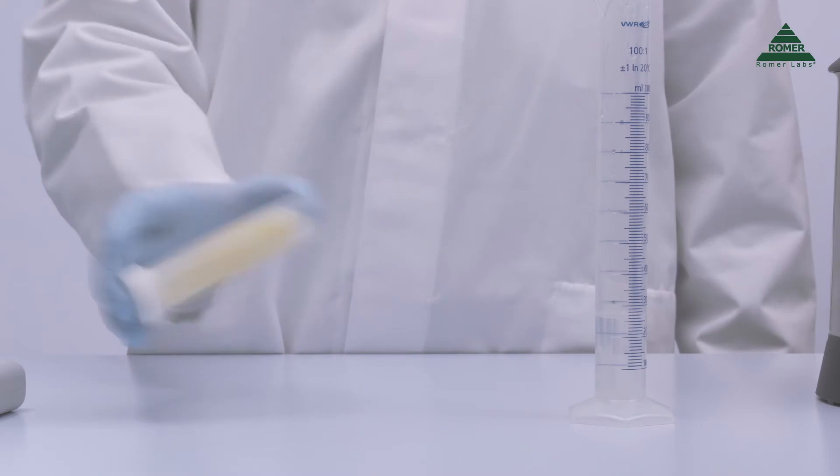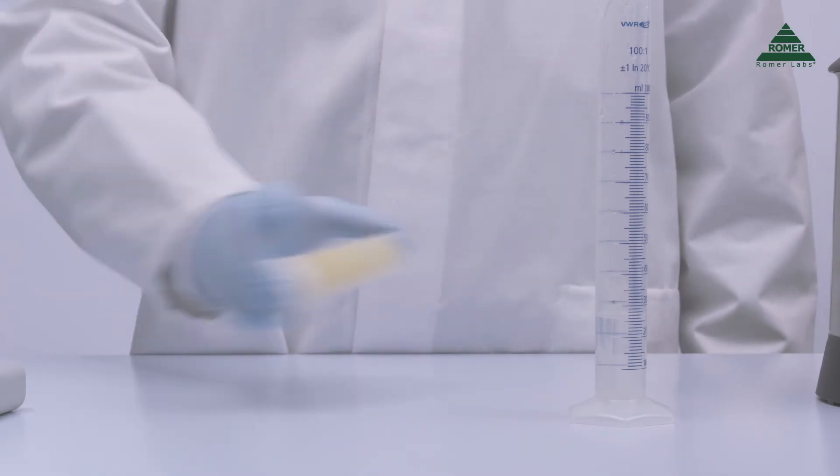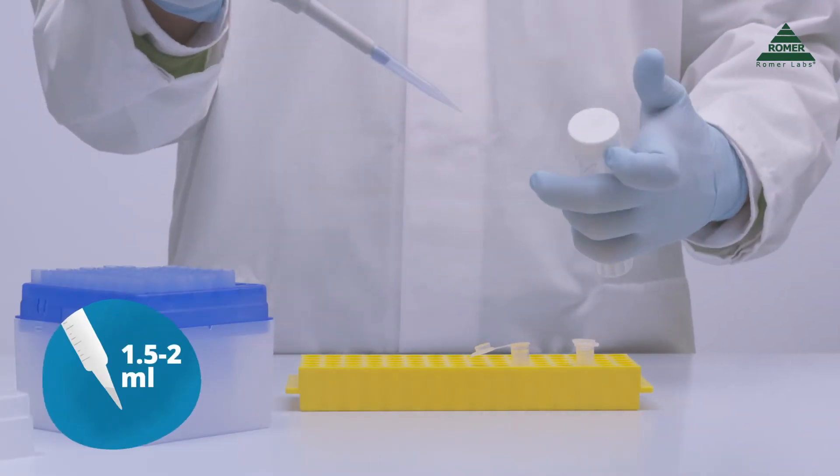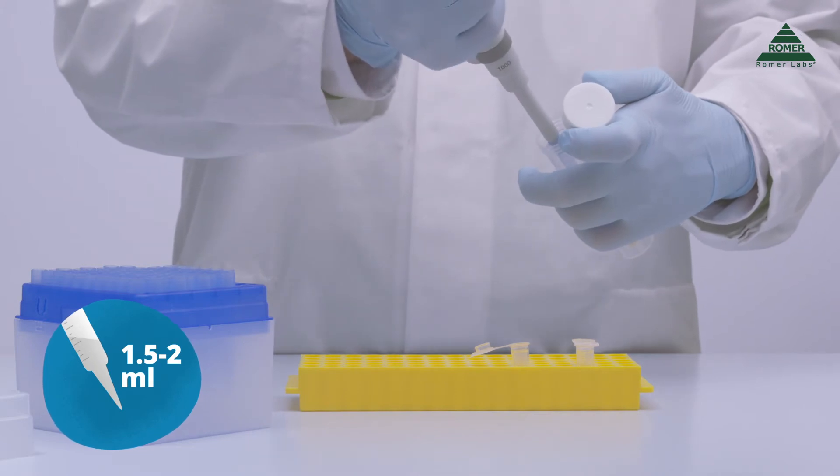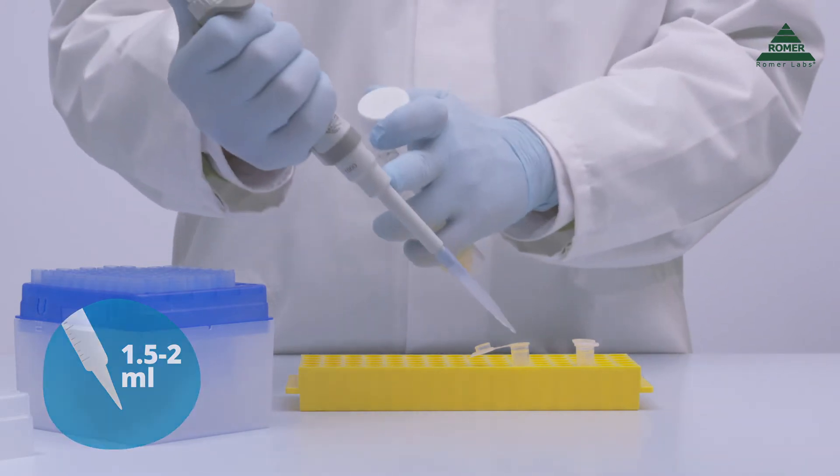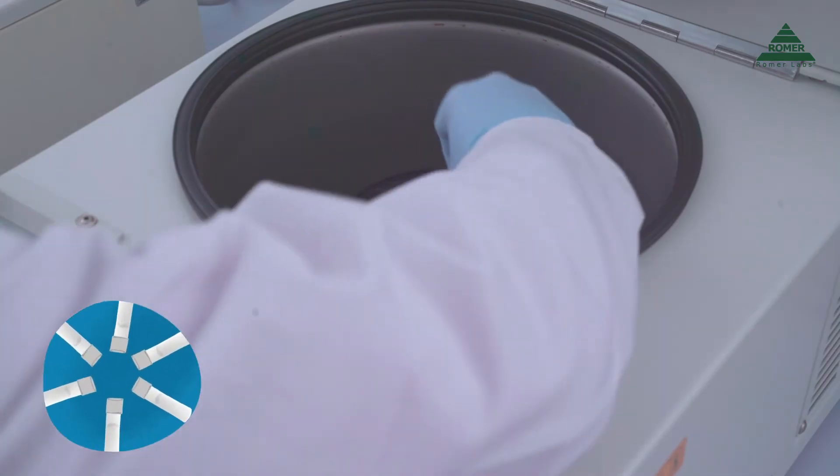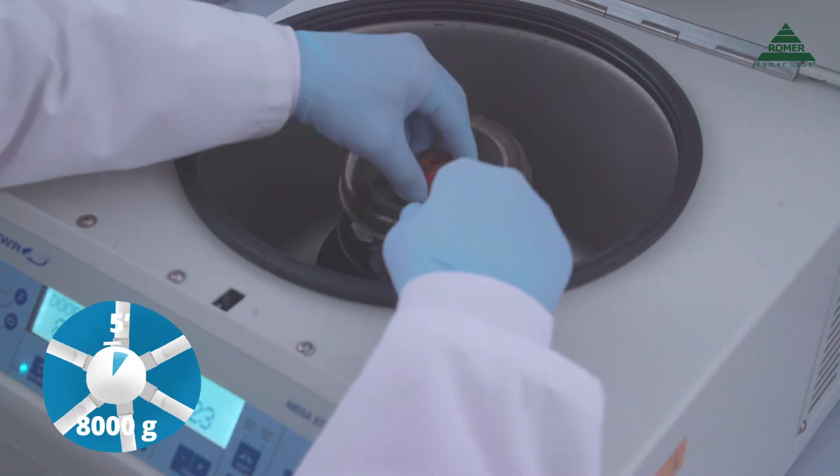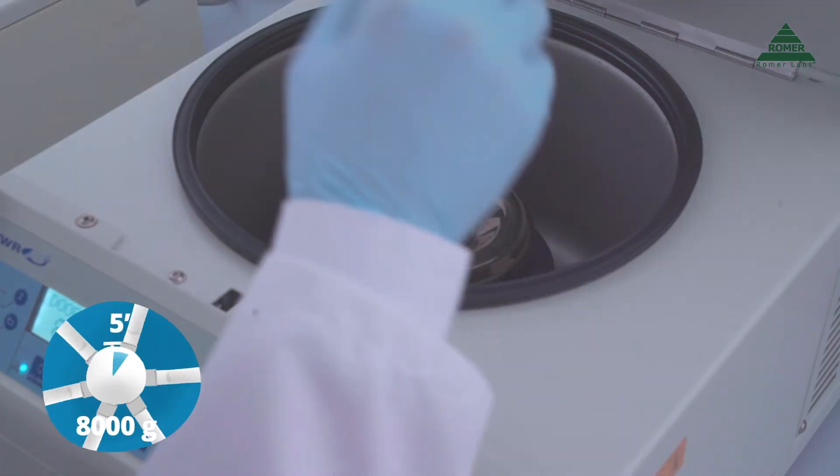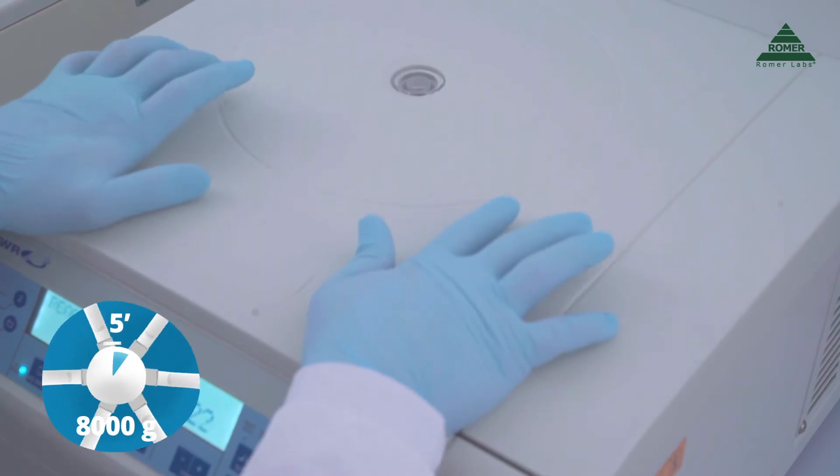Close the tube and shake vigorously. Take a 1.5 or 2 milliliter aliquot of the sample and put it into a microcentrifuge tube. Centrifuge the tubes for 5 minutes at 8000 G. Let your sample cool down and it will be ready for testing.